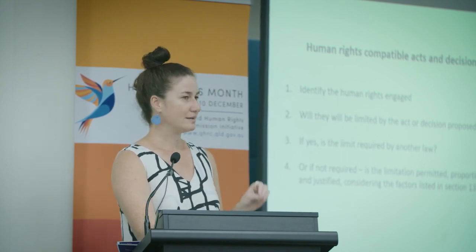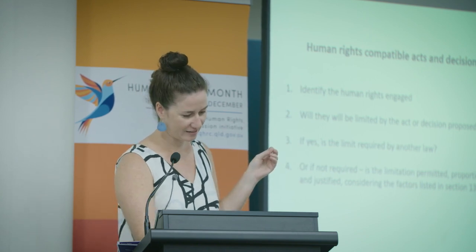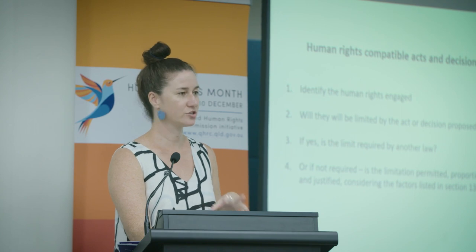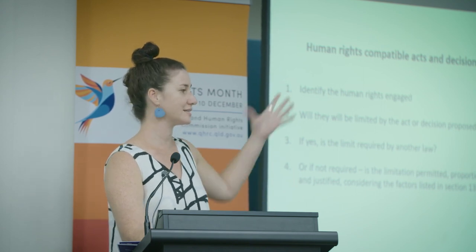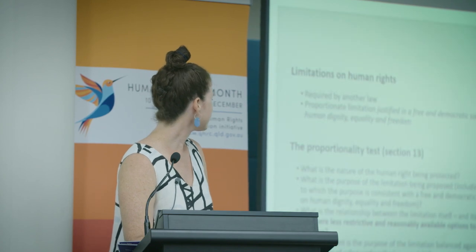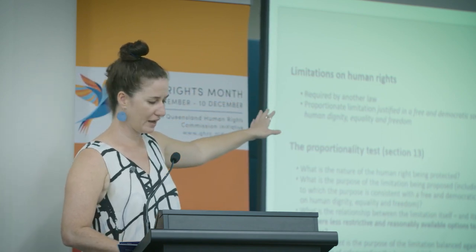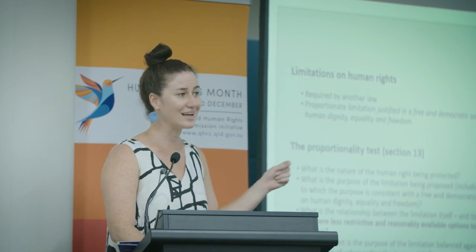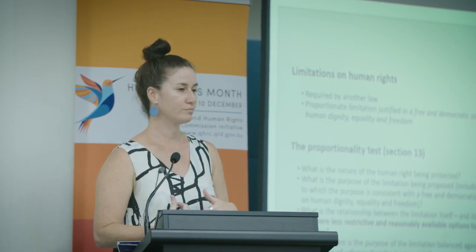If an action or decision seems to be in breach of Section 58, you then need to think about whether or not that action will be permitted by another part of the Human Rights Act. This is the balancing process referred to earlier. There are going to be a lot of situations where Section 58 will have been breached, but something else permits that. The first limitation: if it is required by another law, a decision maker who could not have reasonably acted differently because another law required them to act in that way will still have their action or decision protected.